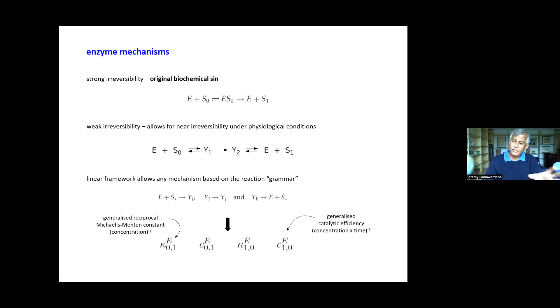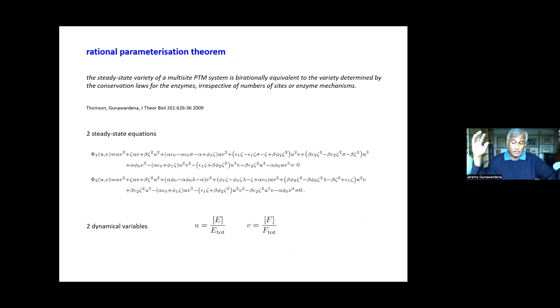So we have this two-site modification system. There are two enzymes and the enzymes are acting on two substrates. Each of those actions can take any of these mechanisms, so there are in principle four different mechanisms available. We're assuming that they're weakly irreversible. This is in principle describing an unbounded number of different systems.